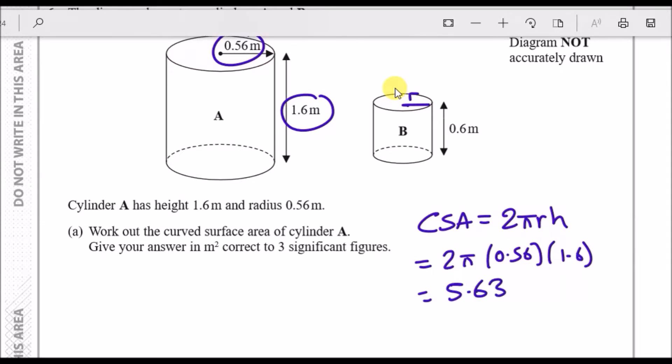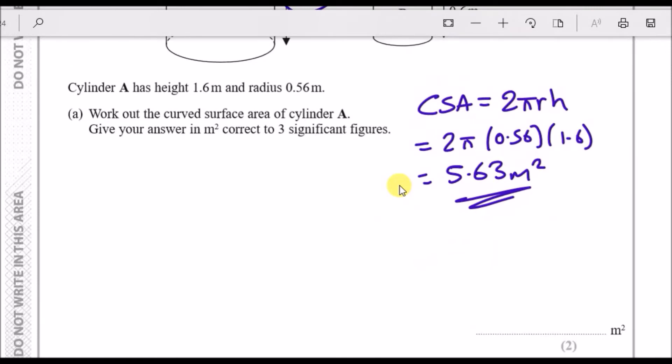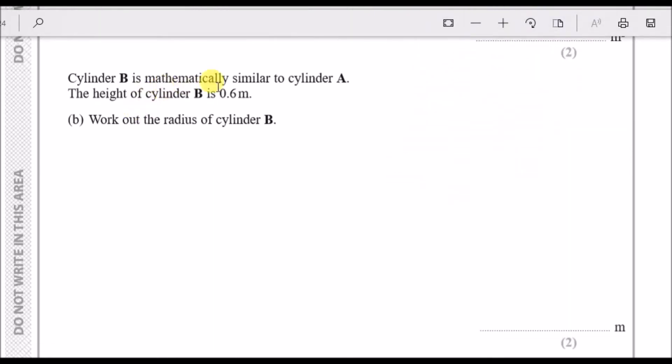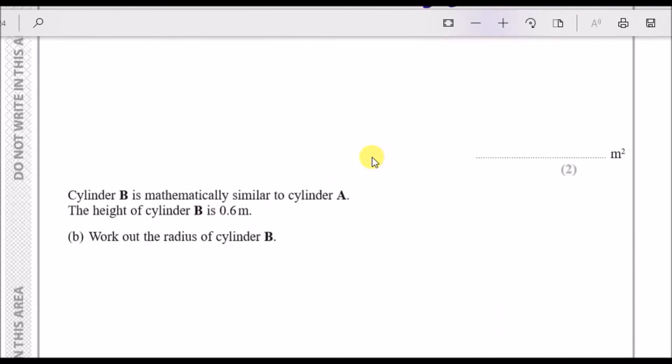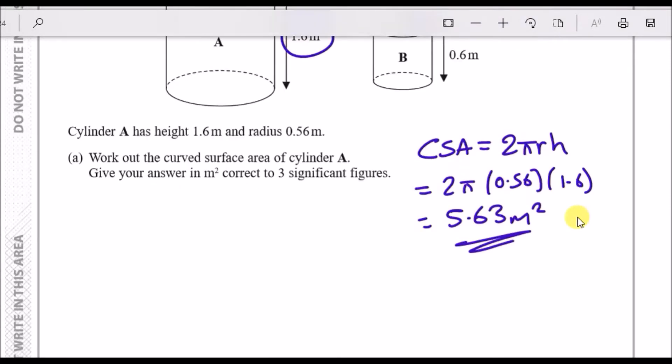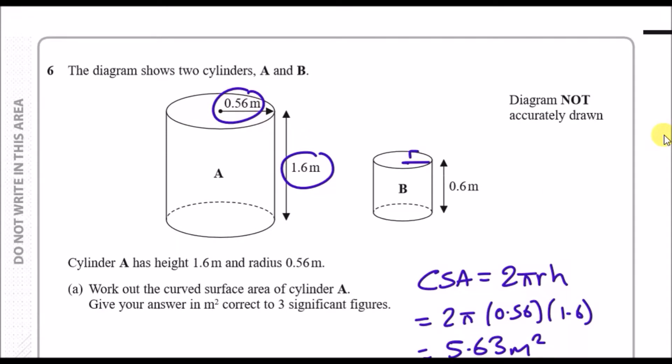Cylinder B is mathematically similar to cylinder A. What that means is that these two are directly proportional. So 1.6 is proportional to 0.6, meaning 0.56 is proportional to B's radius. You can say 0.6 over 1.6 will give us three eighths in the calculator.